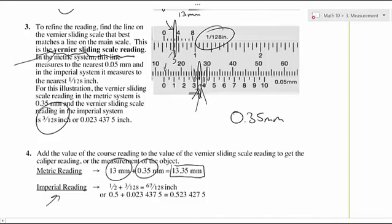The imperial reading, a little bit more complicated, but we've got our half inch plus our 3 1/28th of an inch. That's going to give us, you know, a little bit tougher math, but 67 over 128th of an inch. It's not too difficult. You just need to know what you're doing when you're reading this. Hope you can figure this out from what I told you. Thanks a lot for watching.